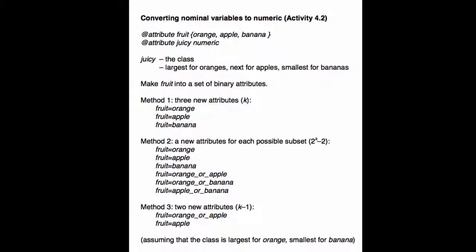So, this effectively creates a binary attribute for each subset of possible values of the fruit attribute. Actually, we don't create one for the empty subset or the full subset with all three of the values in. So, we get 2 to the k minus 2 attributes for a k-valued attribute. That's impractical in general, because 2 to the k grows very fast as k grows.